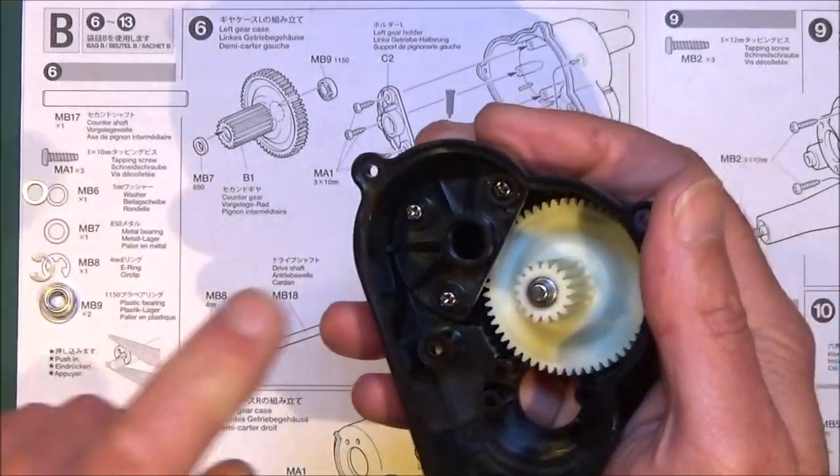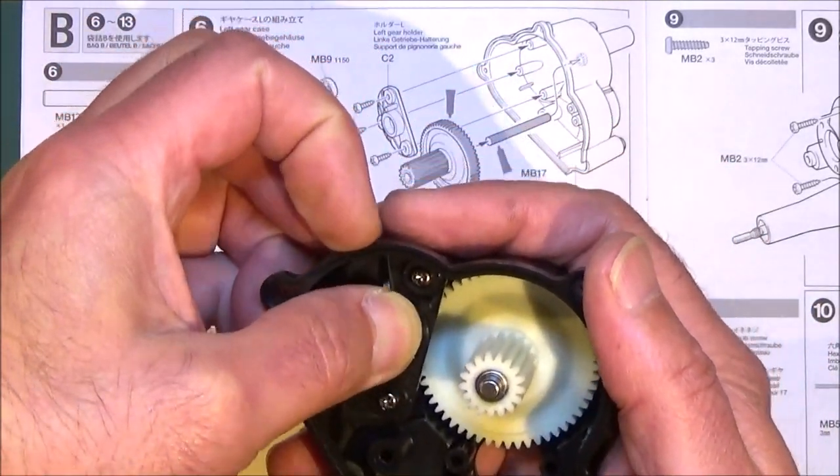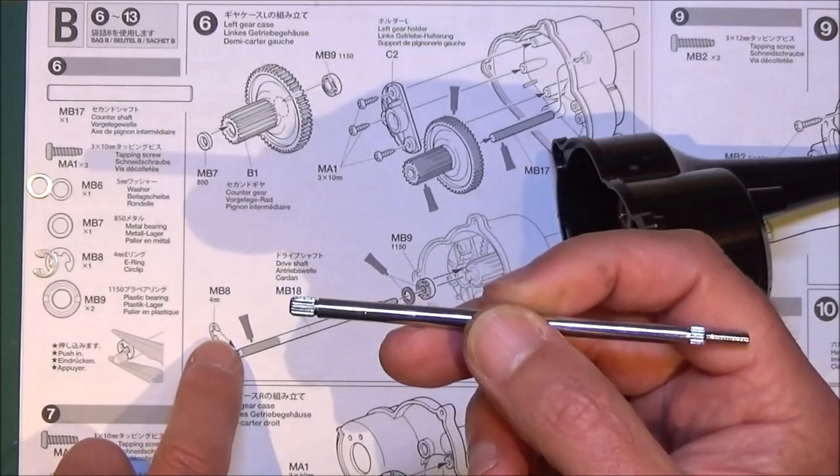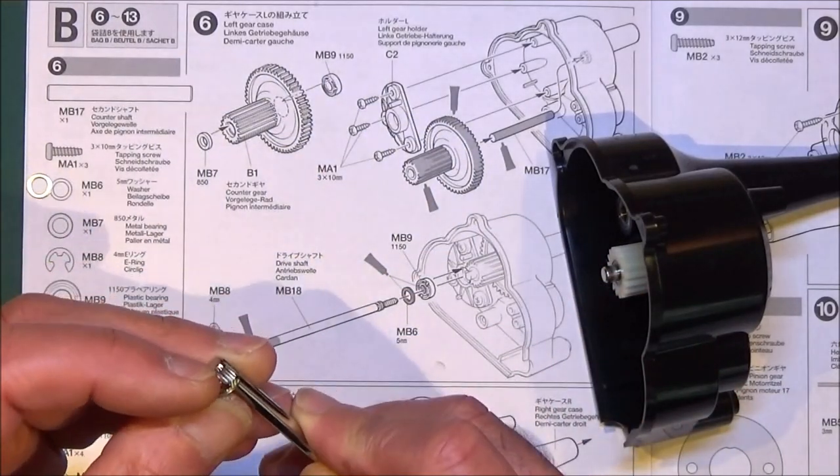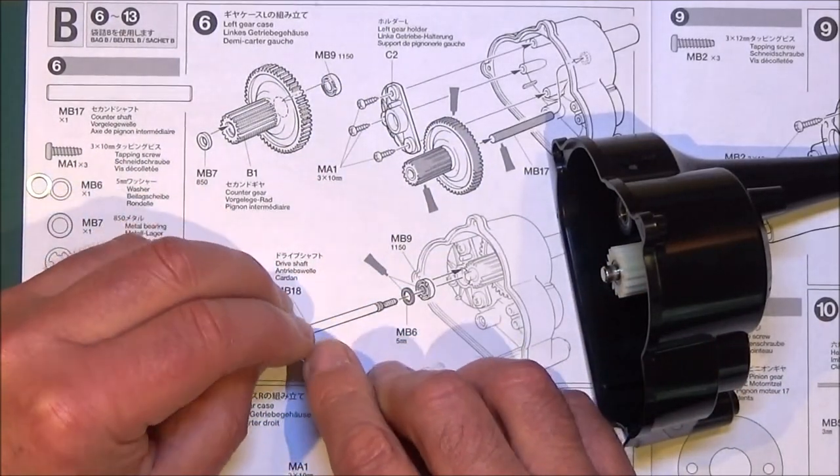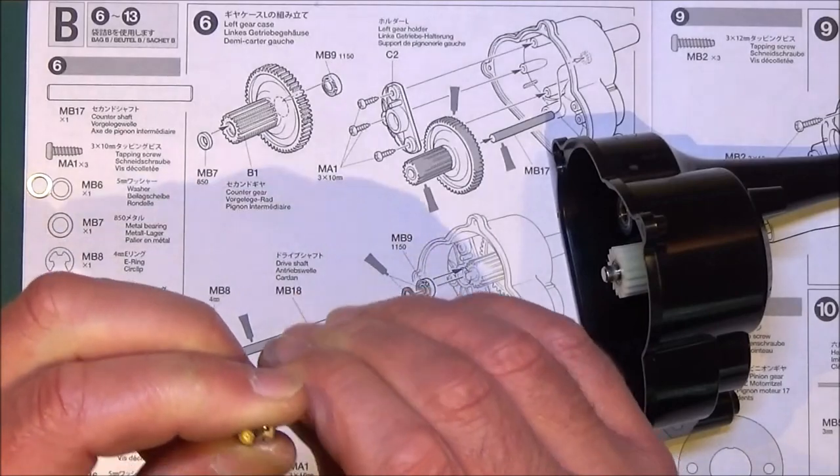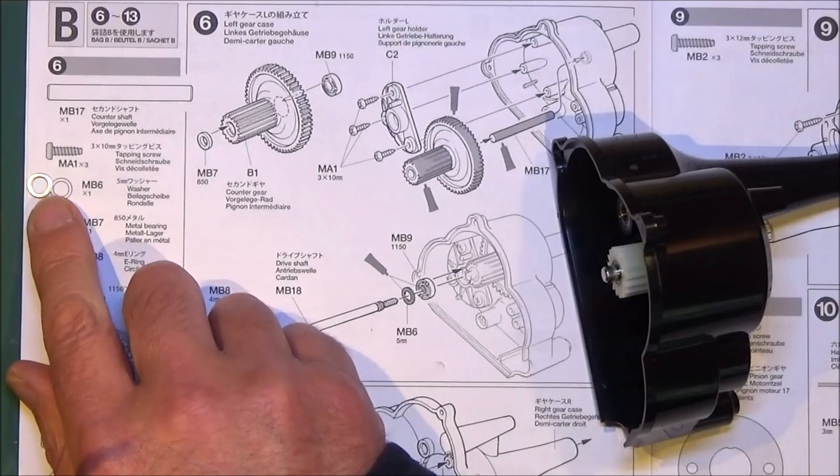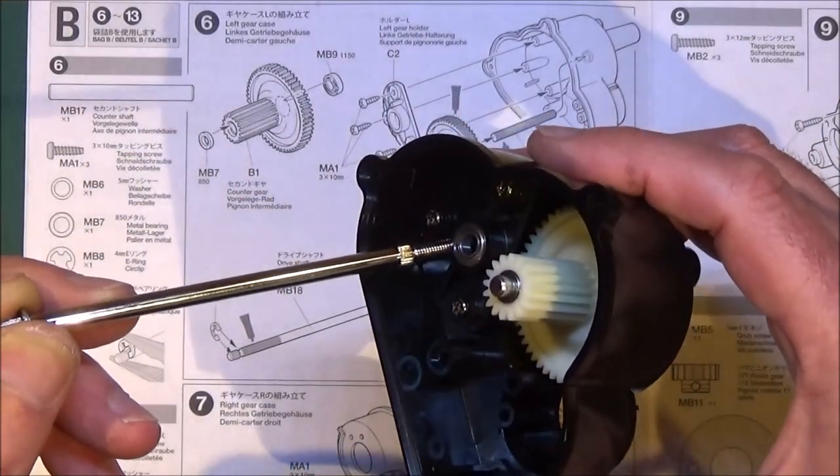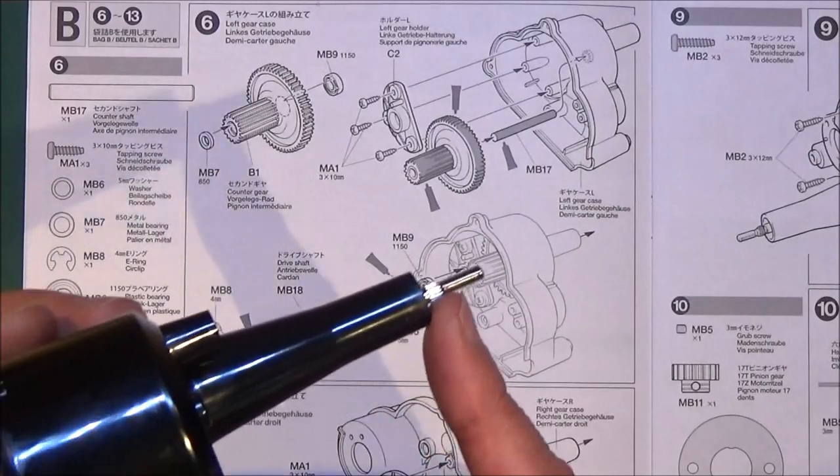When that's in, put your other bearing or bushing, the 1150, in there. Then you want your MB-18 drive shaft. We've got to get this circlip or e-clip onto this end. I tend to put mine on by pressing down on the bench, so just put it in the groove and give it a push down. Then we've got MB-6, which is your tiny washer, and that just goes through that bearing and should come out on the other side where we're going to fit the wheel later.